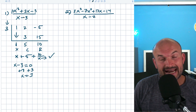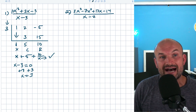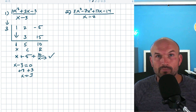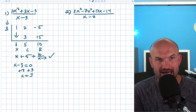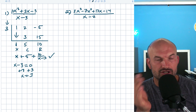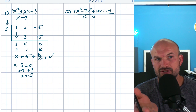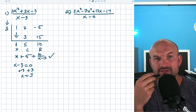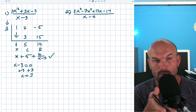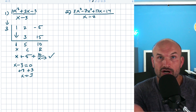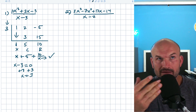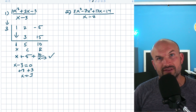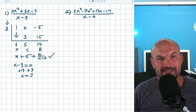As a quick bonus tip: X squared plus 2X minus five is not factorable, so we already know X minus three is not a factor of that polynomial — hence it won't evenly divide into it. The fact that we have a remainder makes sense.